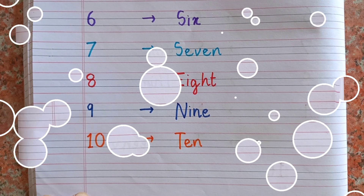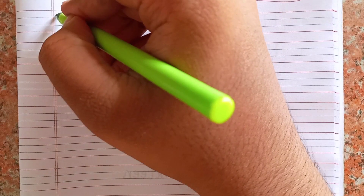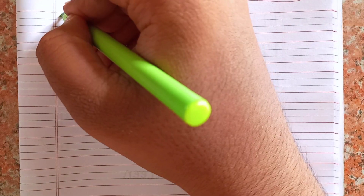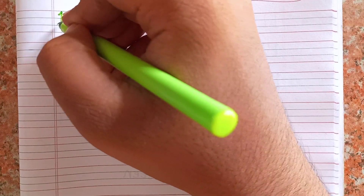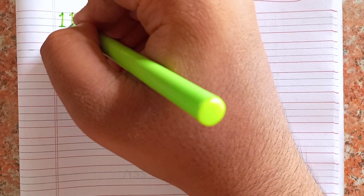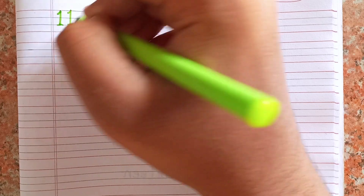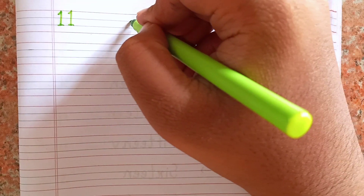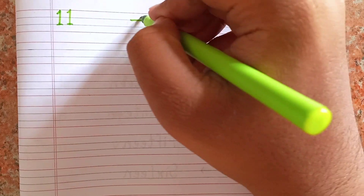After ten, the next number is eleven — 1-1. The spelling of eleven is E-L-E-V-E-N.